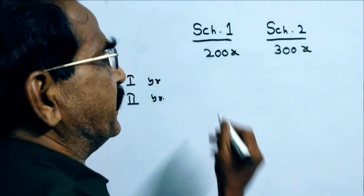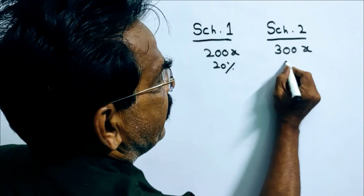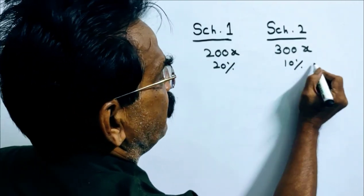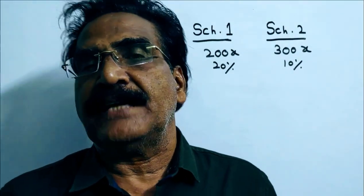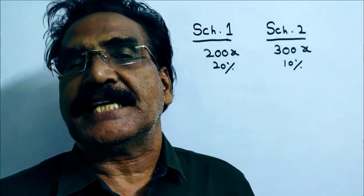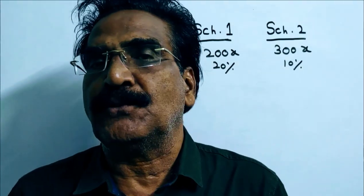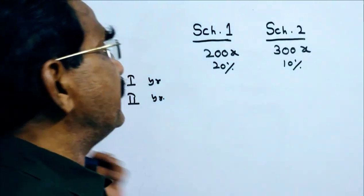Here 20% per annum and here 10% per annum compound interest, and it is given that the total interest received at the end of 2 years from both the schemes is Rs. 1208. Then what is the total amount invested by the man?